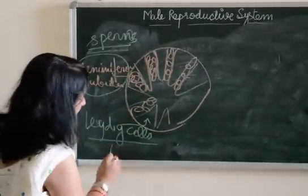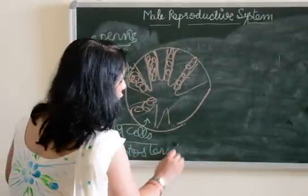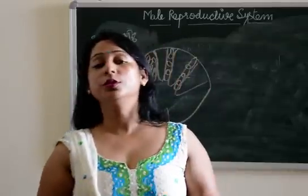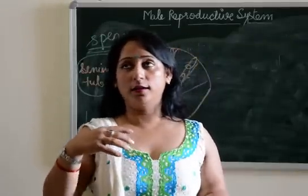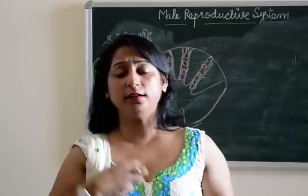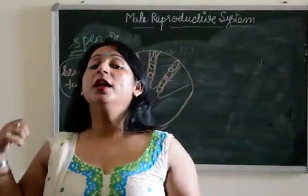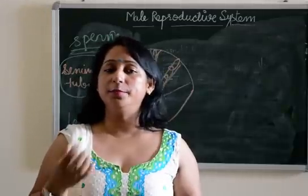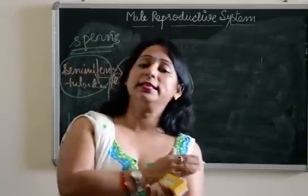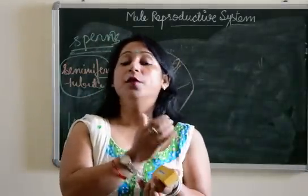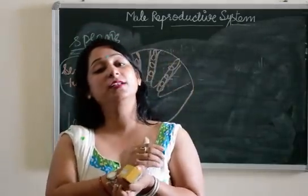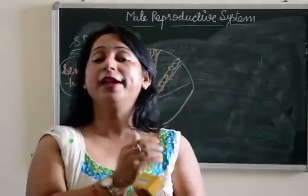The function of Leydig cells is to secrete testosterone. Testosterone is a male hormone involved in the attainment of puberty. When a child attains puberty, the testosterone secreted in males develops the secondary sexual characters. Secondary sexual characters are the characters which differentiate between males and females. The hormone responsible for the appearance of secondary sexual characters in males is testosterone, and in females it is progesterone and oestrogen.